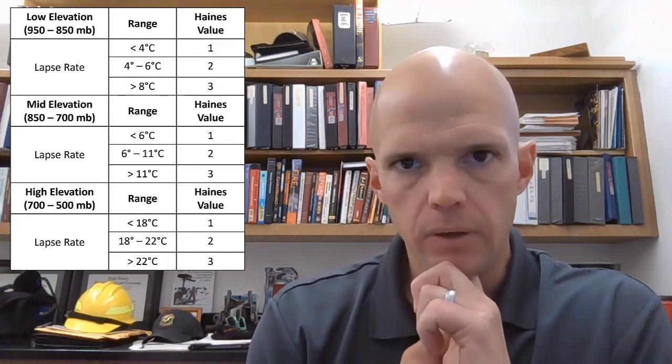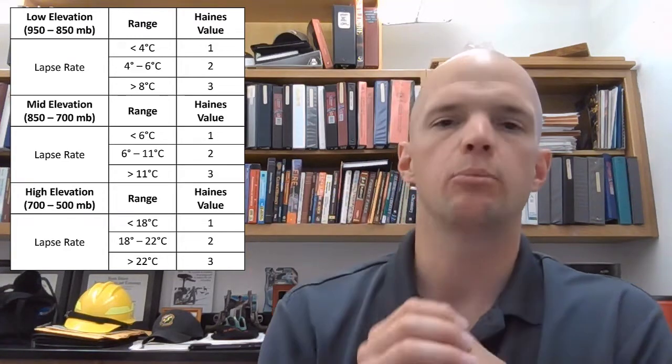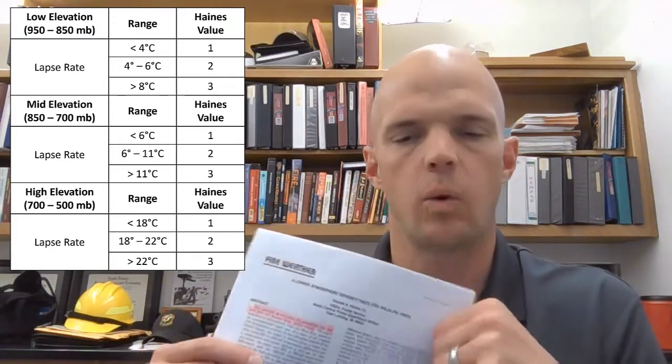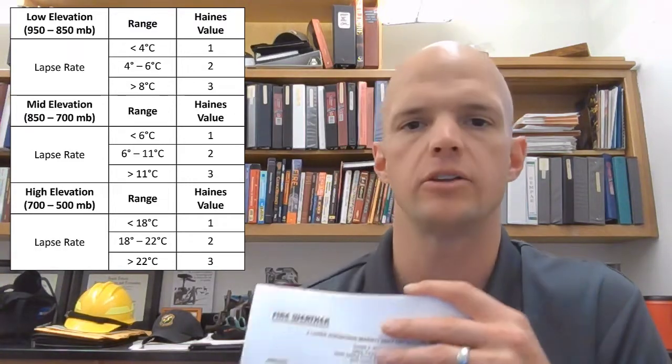Furthermore, if you look at those layers, the lapse rates and its associated Haynes index value of 1, 2, or 3, those lapse rate ranges are completely arbitrary. They're not based upon any kind of science whatsoever. They were just kind of chosen out of the blue. And frankly, Don Haynes really doesn't discuss in detail why he chose the ranges or the thresholds or the breakpoint values he chose to get values of 1, 2, or 3 for the lapse rate side of the Haynes index. So there's really not a lot of science that went into that, which makes it even more dubious as to why we continue to use the Haynes index as a metric of atmospheric instability. The Haynes index is not a measure of atmospheric instability. It is not whatsoever.